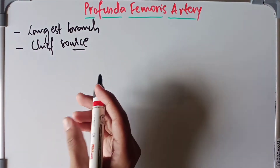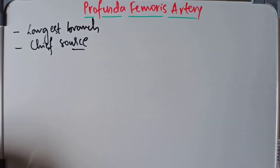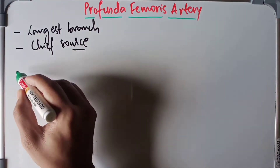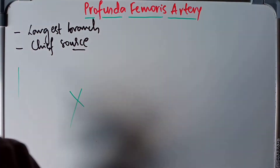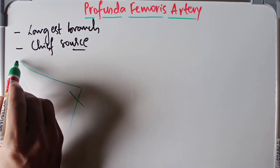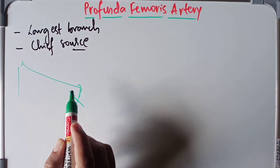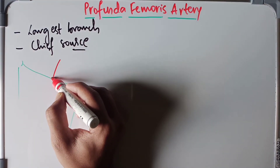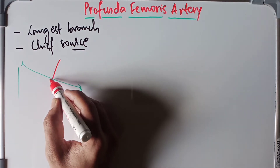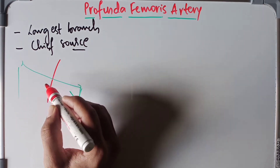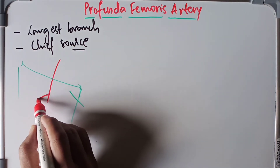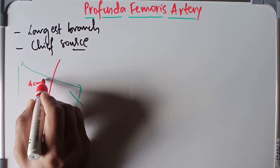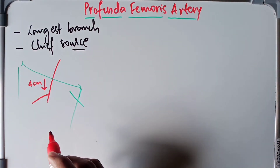The three compartments of the thigh are the anterior, medial, and posterior compartments. The inguinal ligament extends from the anterior superior iliac spine to the pubic tubercle. The external iliac artery, as it passes below the inguinal ligament, becomes the femoral artery. Lateral to the femoral artery, the profunda femoris artery arises about four centimeters below the inguinal ligament.